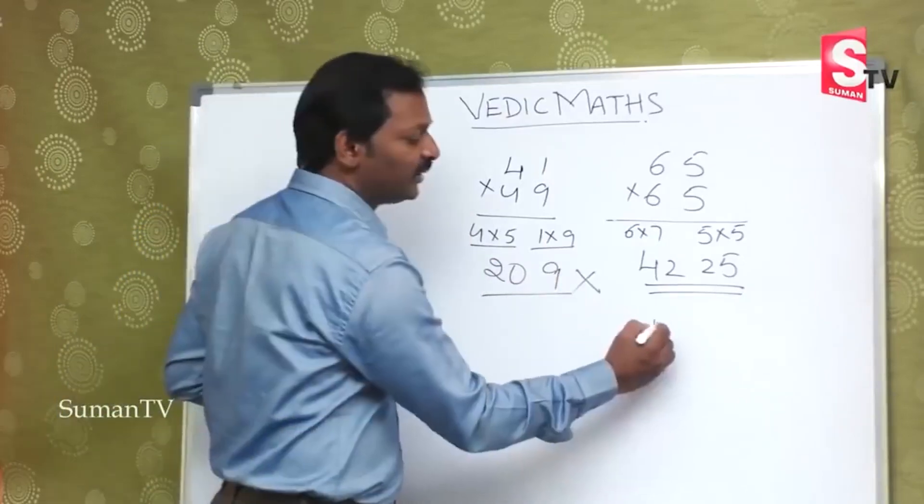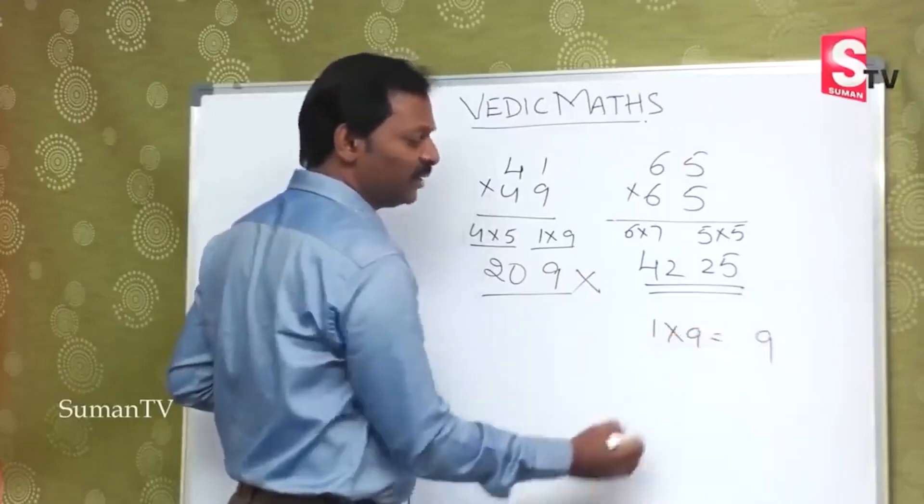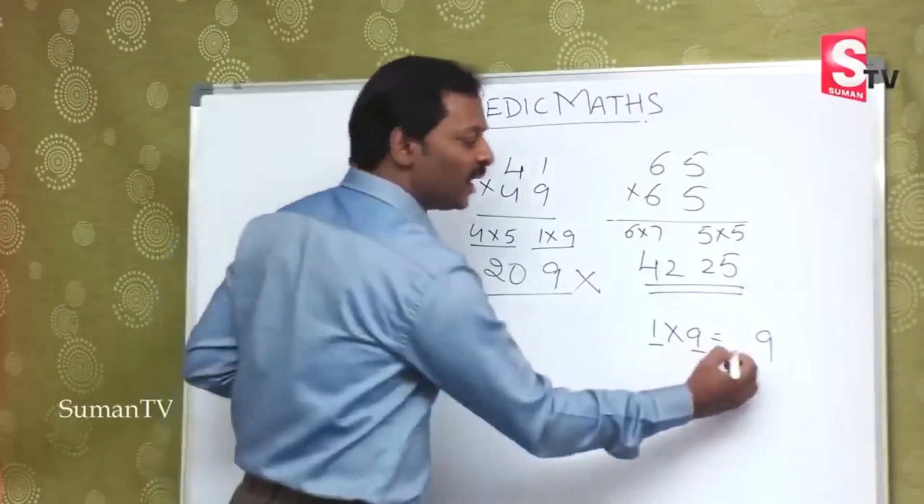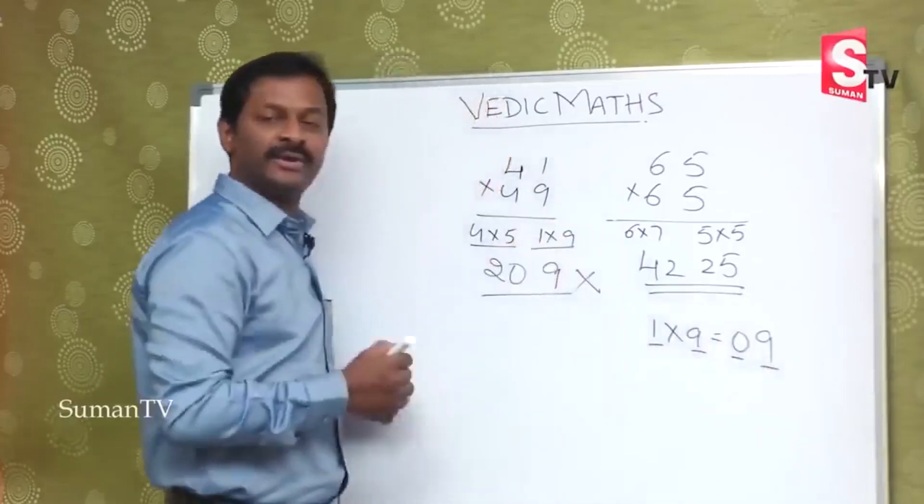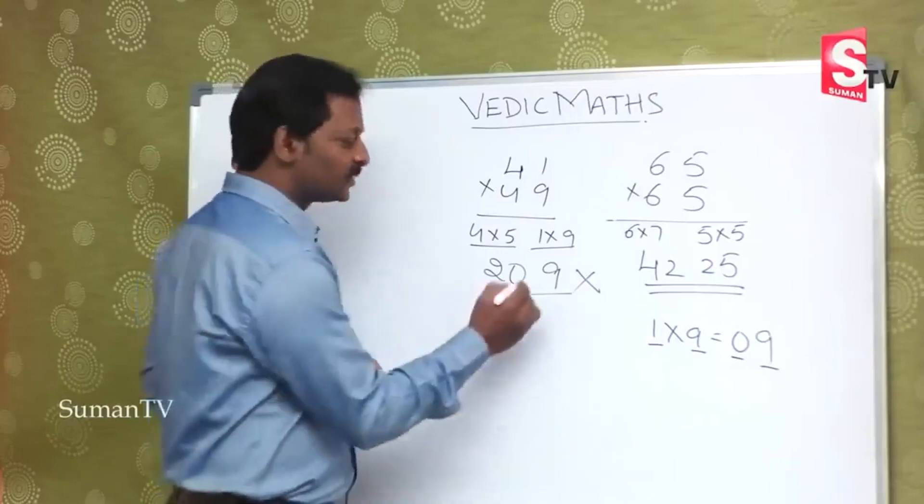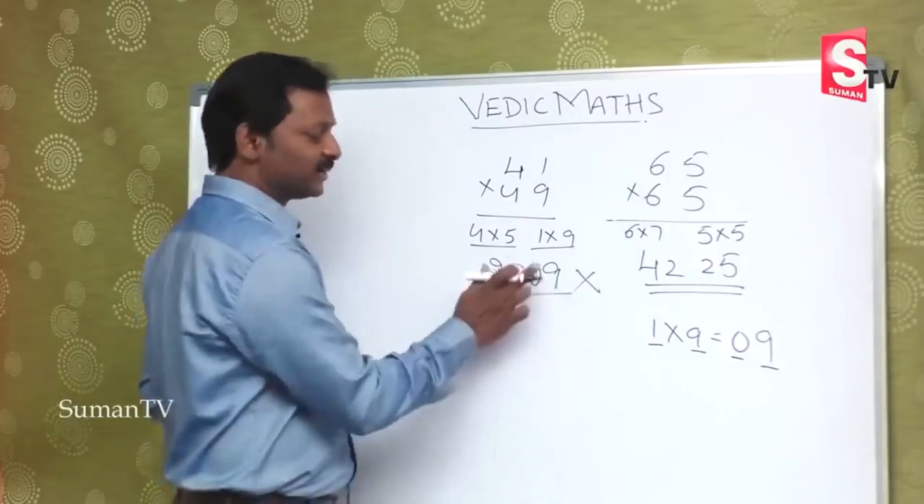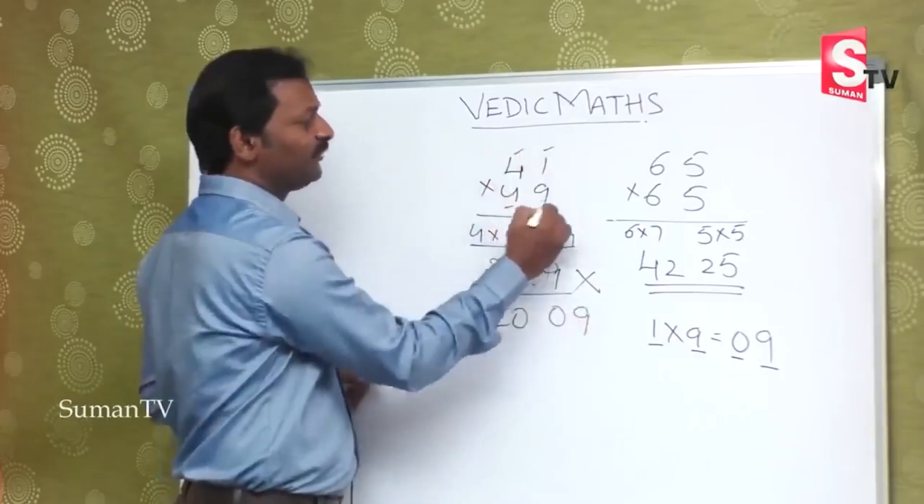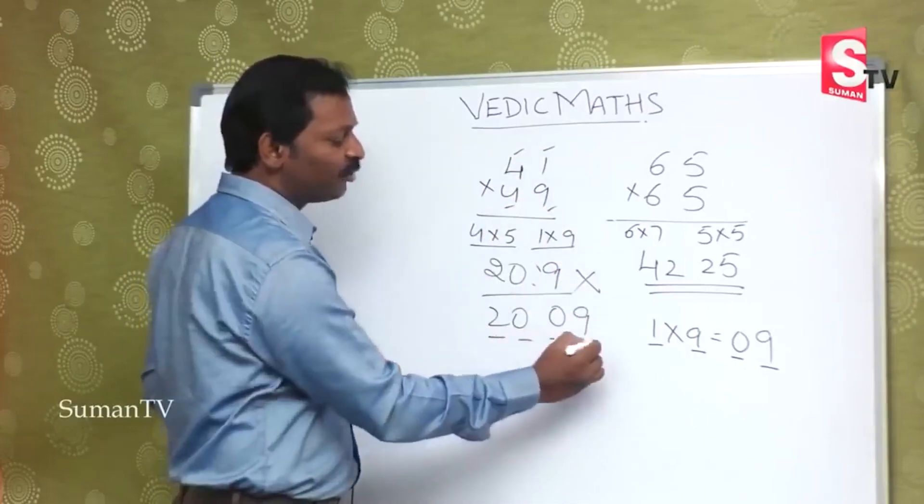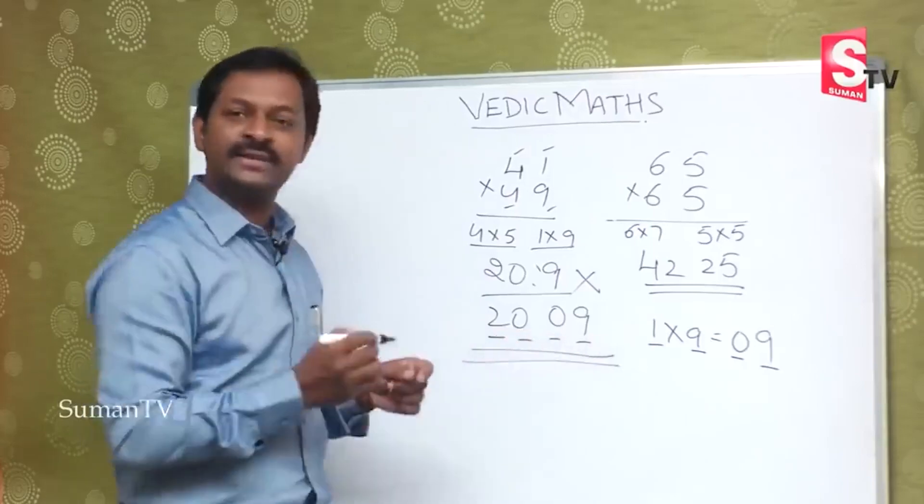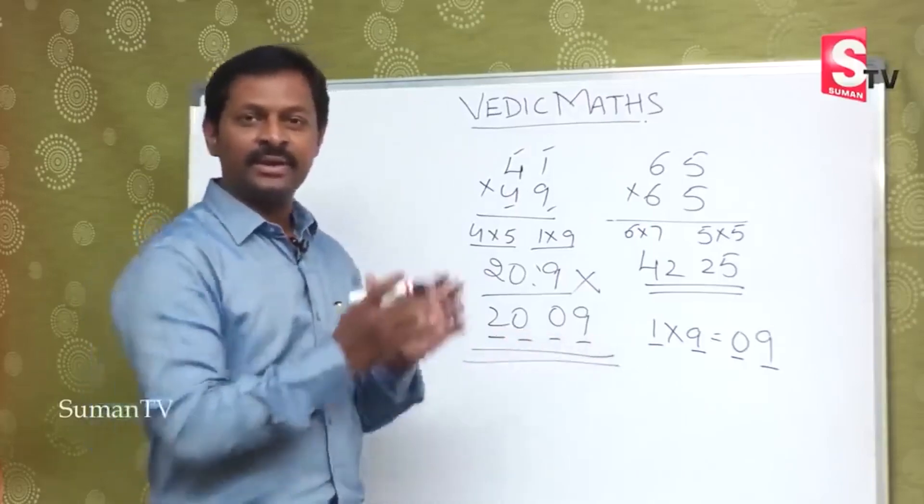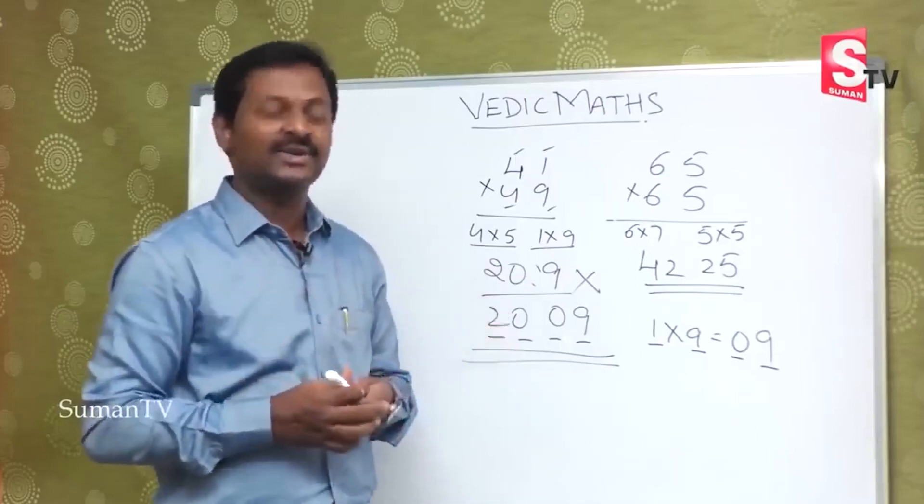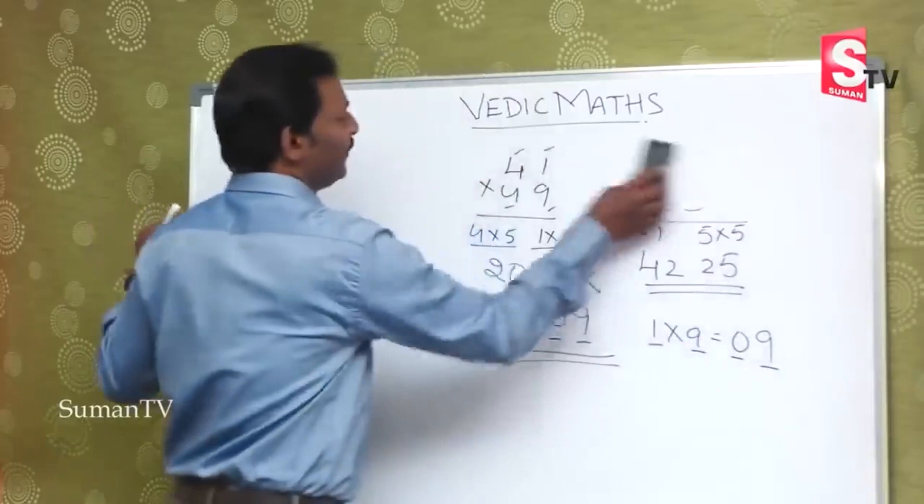Actually, 1 into 9 equals 9, but because there are 2 digits in the question, the answer also must have 2 digits. So it's 09. This is the right answer: 2009. This is 20, this is 09, so total 4 digits. The answer should also have 4 digits. This is the right answer. So we will take one more concept.